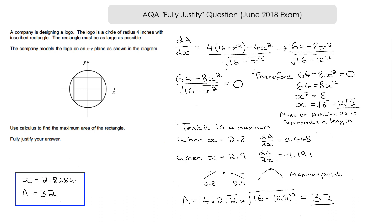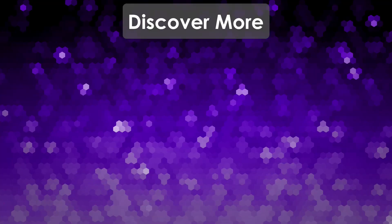I hope that's made it clearer why you need to show as much working as possible, justifying each step — especially confirming that the stationary point is a maximum, which could easily be missed. Nothing wrong with getting results from your calculator; just box them off, label them as a calculator check, and use them to verify your fully justified answer. Don't forget to subscribe for future videos — thank you for watching and I'll see you next time on The Calculator Guide.